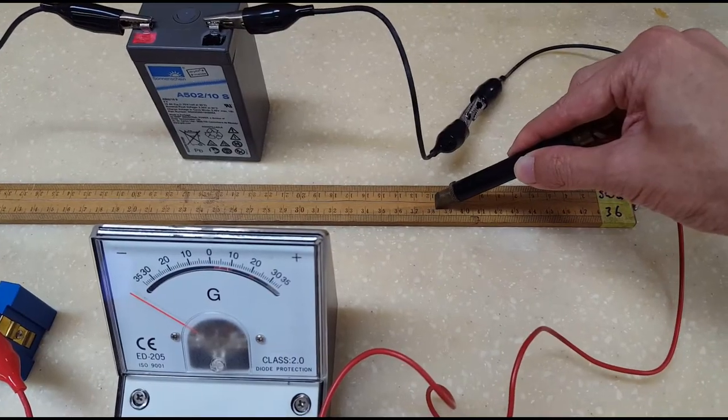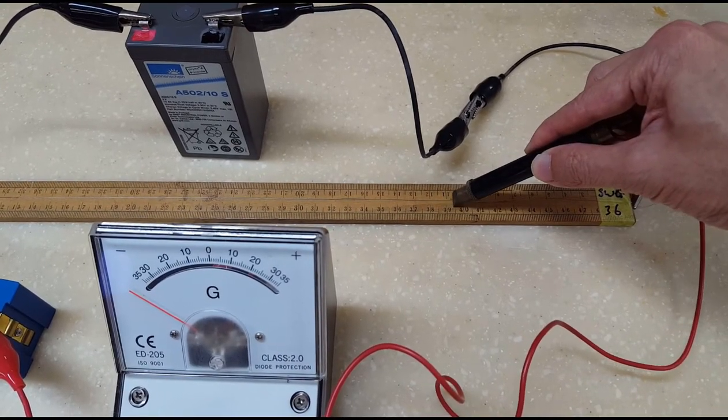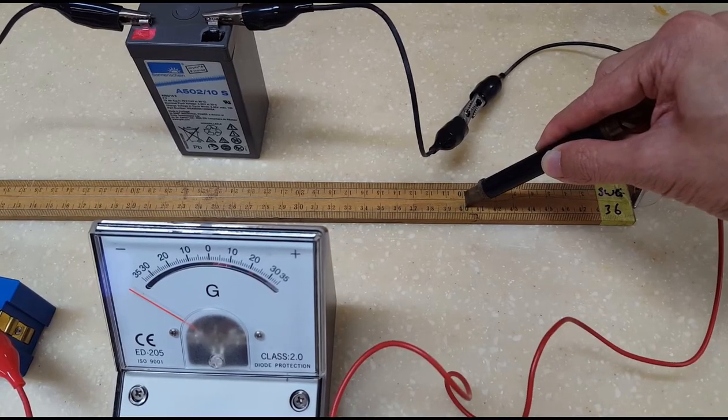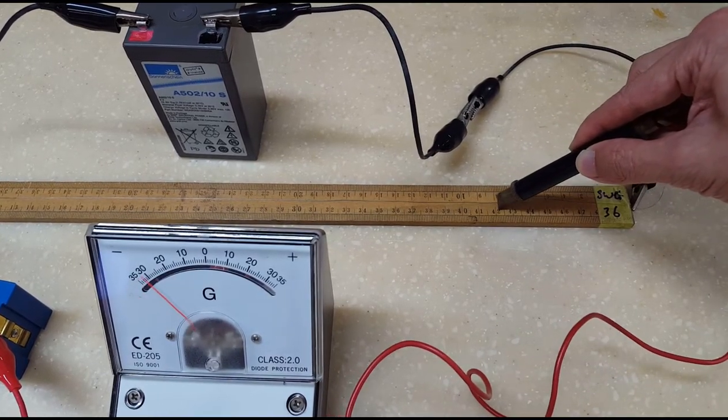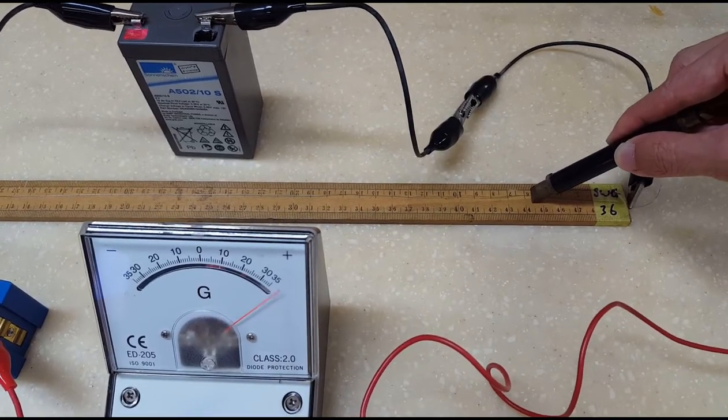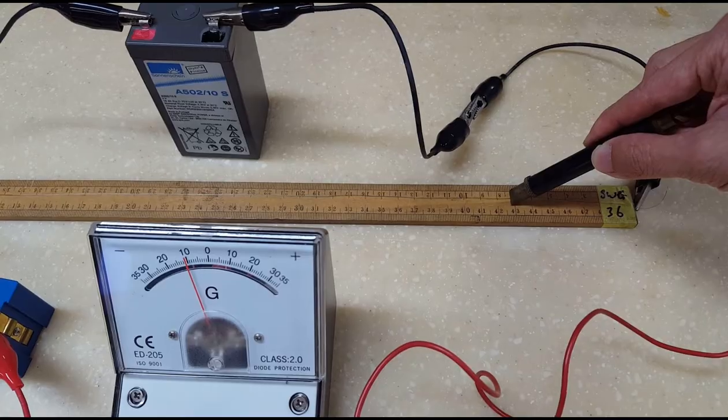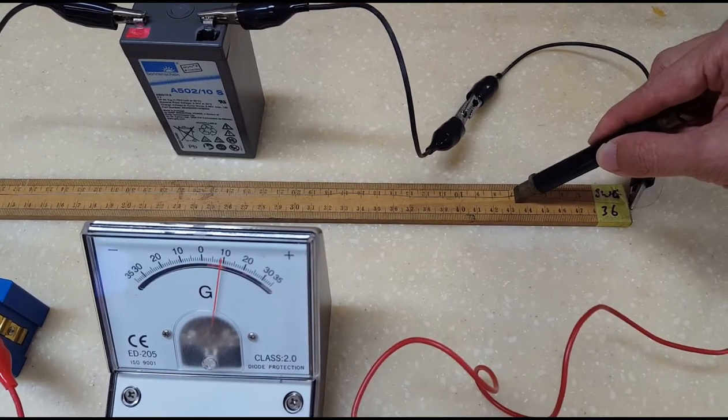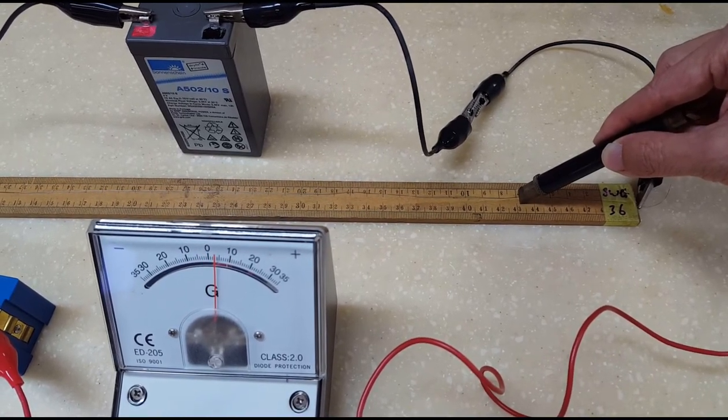Now notice that if the jockey is tapped too far to the left, the galvanometer shows a deflection one way, but if it's tapped too far on the right, the galvanometer shows a deflection the other way. So somewhere along the slide wire, there's a null deflection point where the galvanometer shows no deflection.